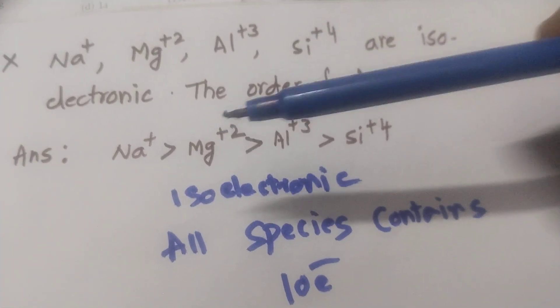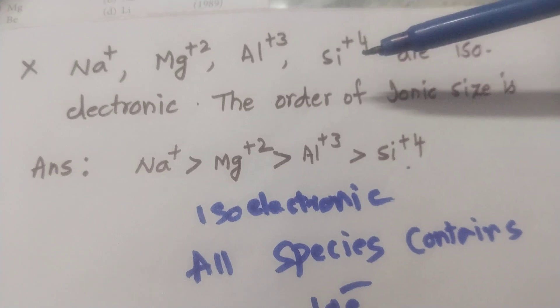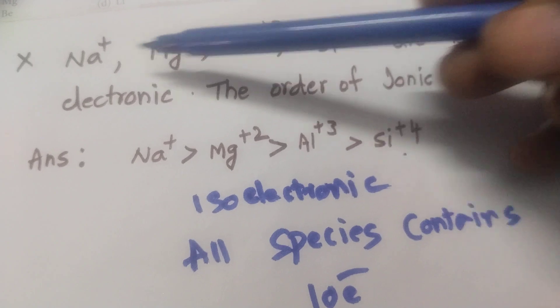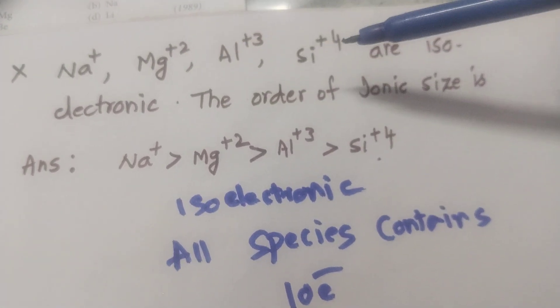The order of the ionic size. Here, the simple trick is as positive charge increases, size decreases. Positive charge here 1, positive charge here 2, here 3, here 4.